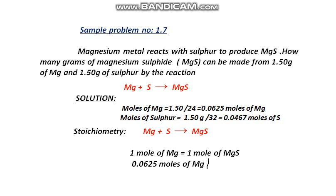We will divide one by one and multiply it by this value, 0.0625 moles. If you calculate this, the answer you get is 0.0625 moles of magnesium sulfide.